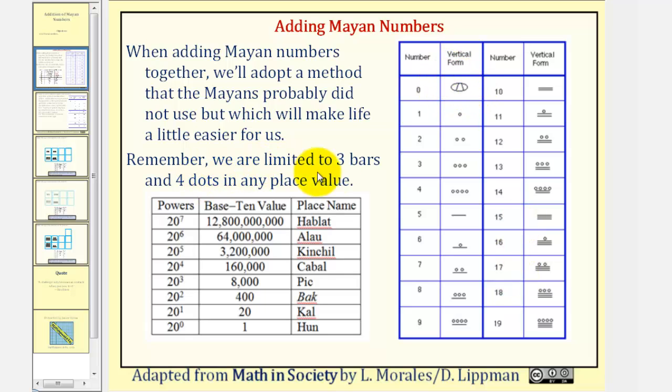We are limited to having three bars and four dots in any place value. So if we had five dots, we'd exchange this for one bar worth five as we see here. And if we have four bars, we'd perform an exchange for one dot in the next place value up.